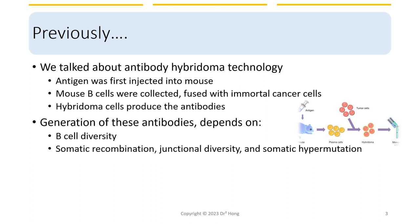The basis for these antibodies relies on the animal's adaptive immune response. The antibodies' affinity and specificity depend on the B-cell diversity and the three mechanisms behind B-cell diversity, namely somatic recombination, junctional diversity, and somatic hypermutations.